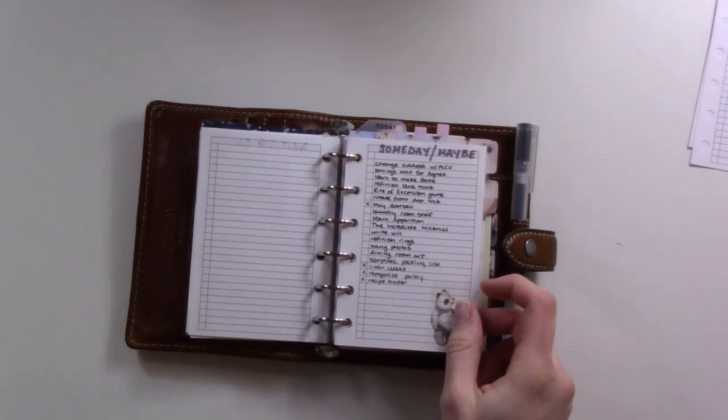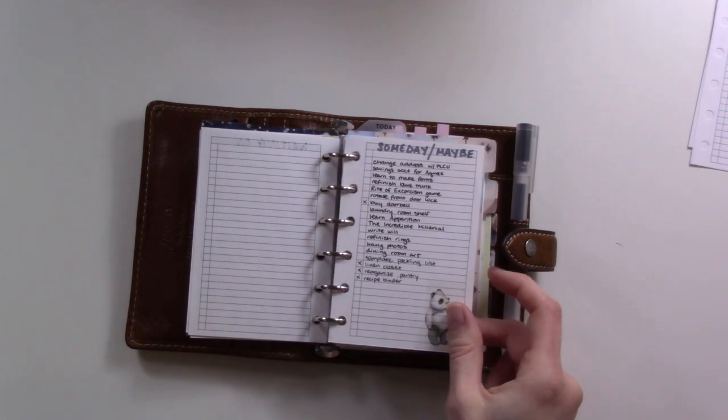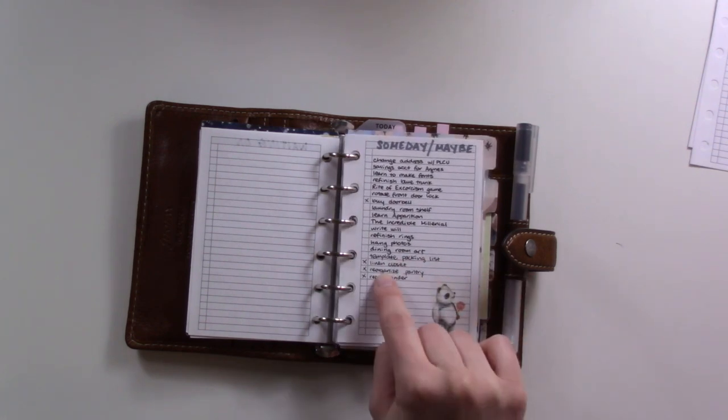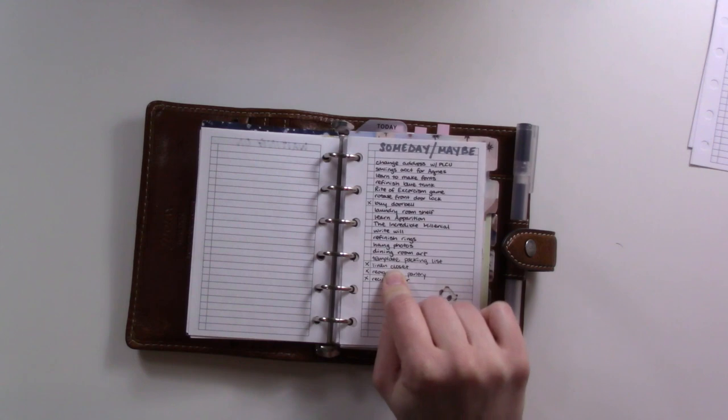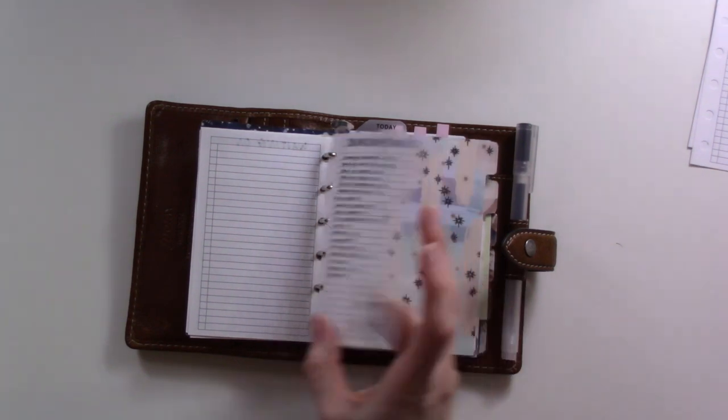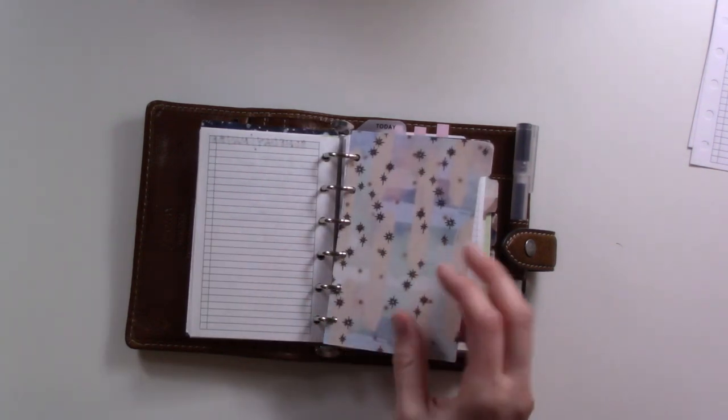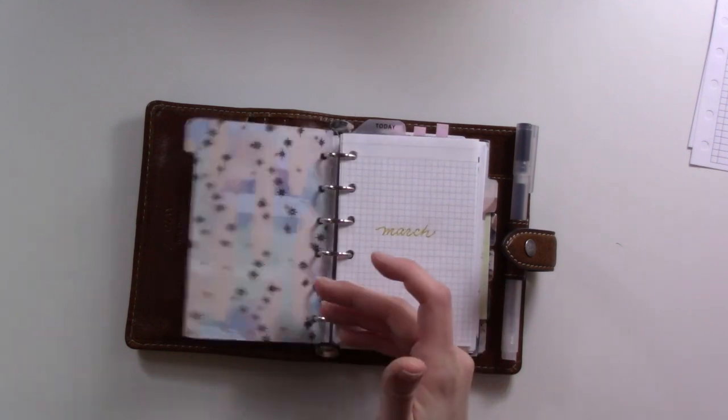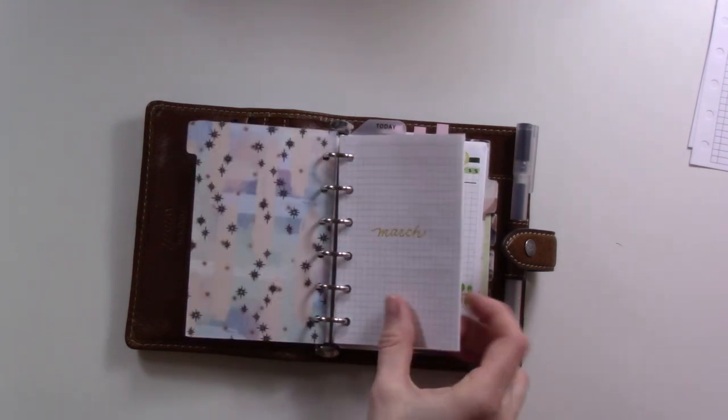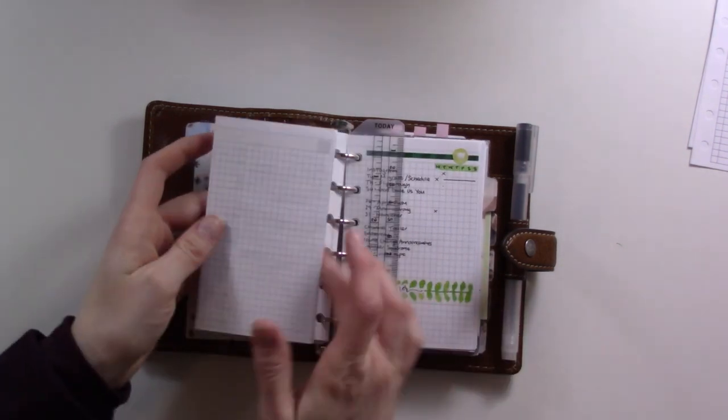Someday maybe list - I do want to really work on a lot of these things, like projects around the house. I've been picking one per month. This last month I worked on reorganizing our linen closet and it looks amazing. If you follow me on Instagram you'll have seen that in my stories this last weekend. I'm very proud of myself. I put all the baby toys in there.